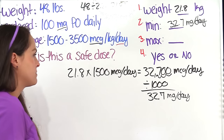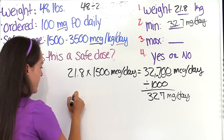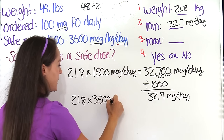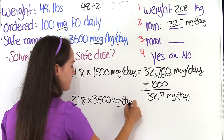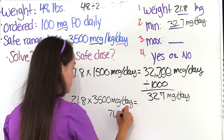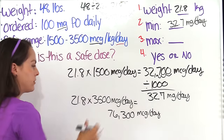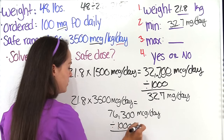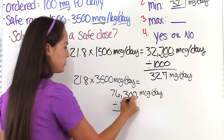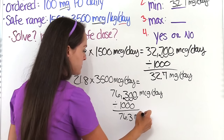Now let's solve for the maximum. Using the same steps but with 3,500: the patient's weight 21.8 multiplied by 3,500 micrograms per day gives us 76,300 micrograms per day. We convert to milligrams by dividing by 1,000 — or moving the decimal three places — and we get 76.3 milligrams per day.